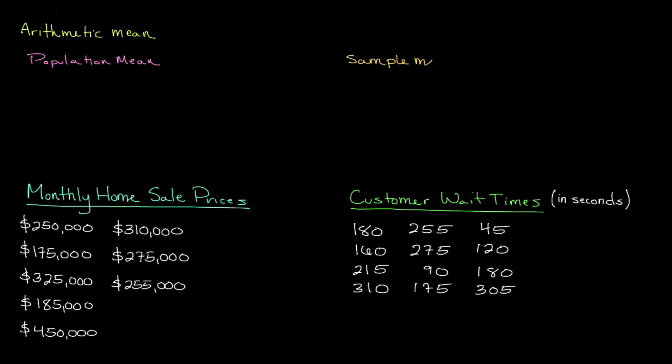Both the population and sample mean serve the same purpose, but they differ in one substantial area. The term population is used to reflect all of the values in a dataset. For example, let's say we wanted to know the mean SAT score for all incoming students at a four-year university. In order to calculate this, we would need to solve for the population mean since we're studying the SAT scores for all incoming students and not just a select few.